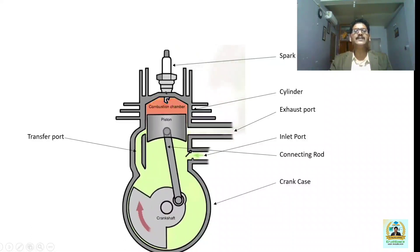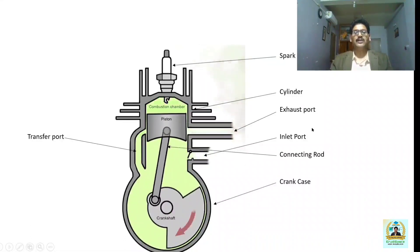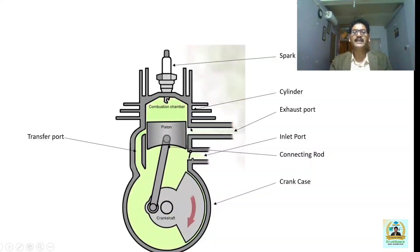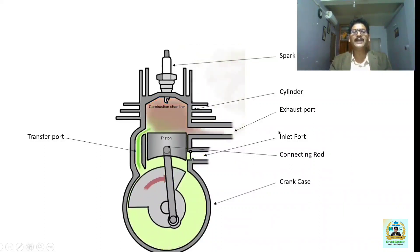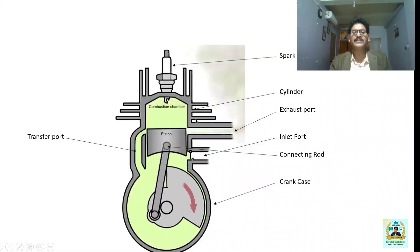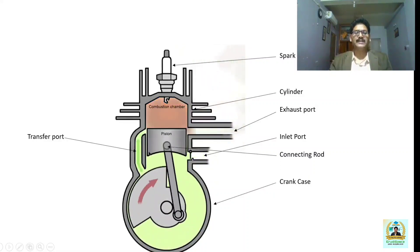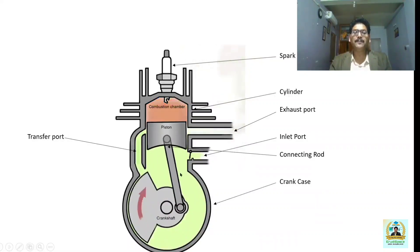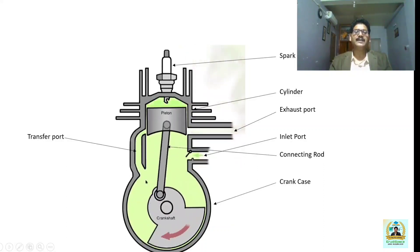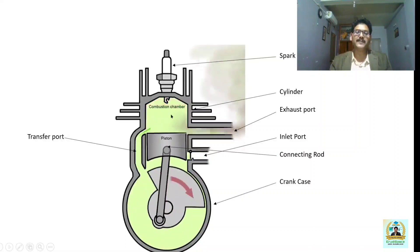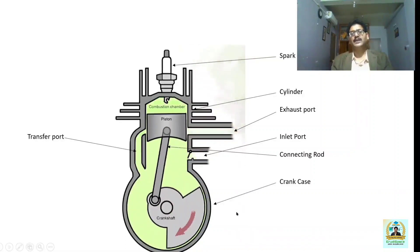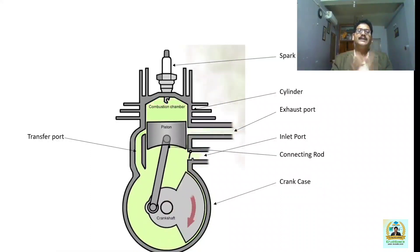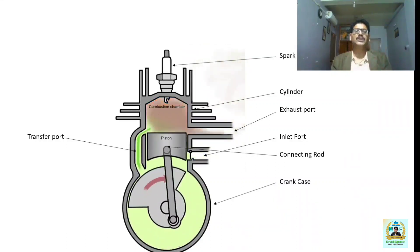In the down stroke, the piston moves from TDC to BDC, uncovering the exhaust port so the burnt air-fuel mixture is expelled through it. In the same motion, the piston also uncovers the transfer port, and the compressed charge from the crankcase enters the top of the piston through the transfer port. In this way, suction, compression, expansion, and exhaust all take place in two strokes — a single revolution of the crankshaft.